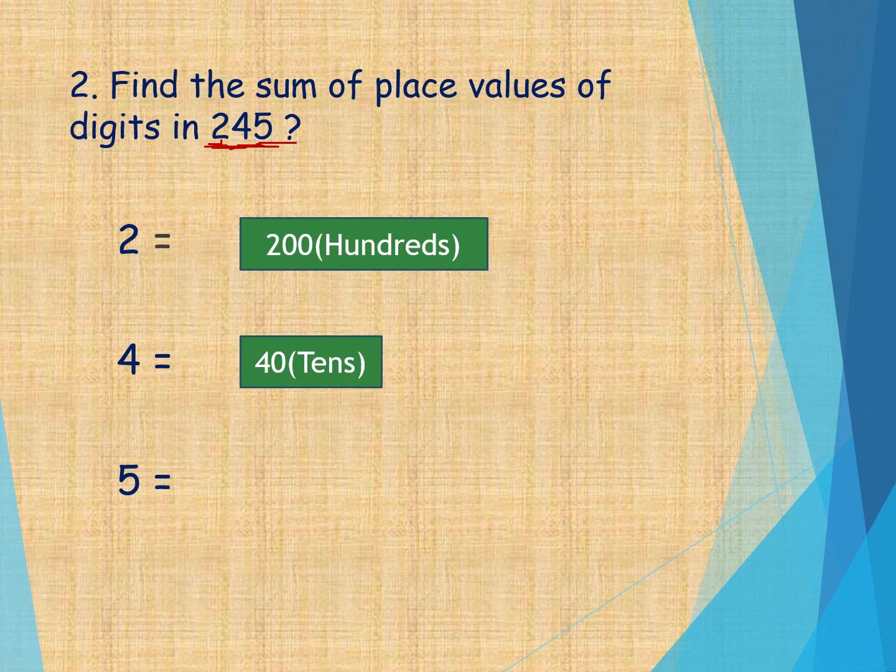Now, what is number 5 position? It placed in 1's place. Here 5 in 1's place, 2 in 100's place, 4 in 10's place. 2 in 100's, 200. 4 in 10's, 40. And 5 in 1's, 5.